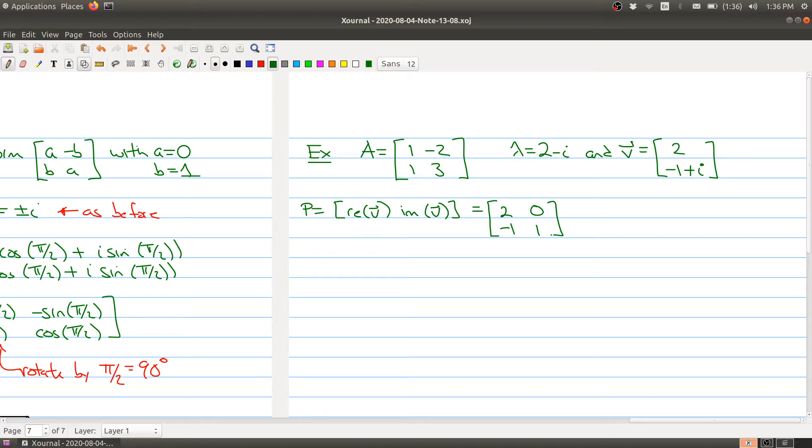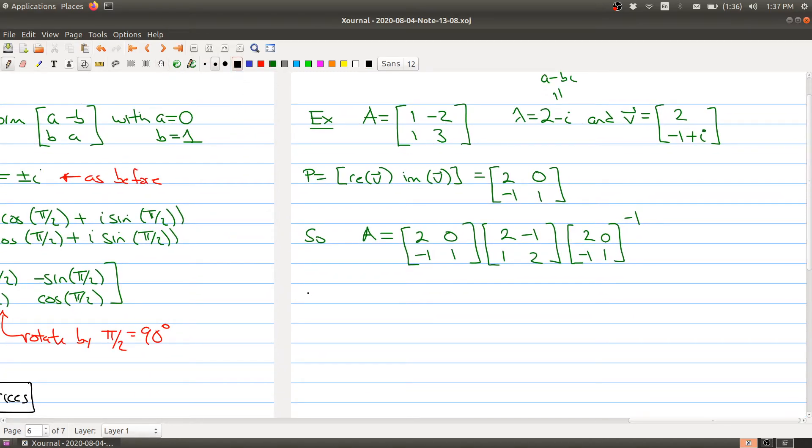There's my matrix P and this is my a minus bi. The theorem tells me that my matrix A can be written as 2, 0, minus 1, 1 times 2 down the diagonal then minus 1 here and 1 over here, coming from the a minus bi, then multiplied by the inverse of my matrix.